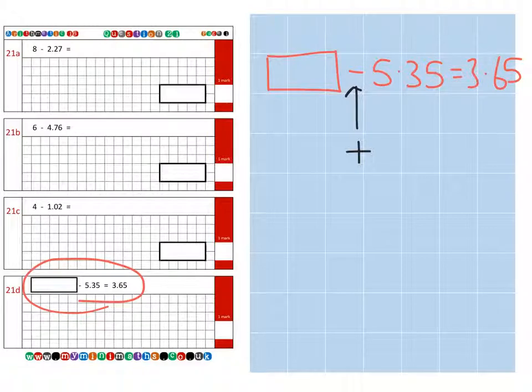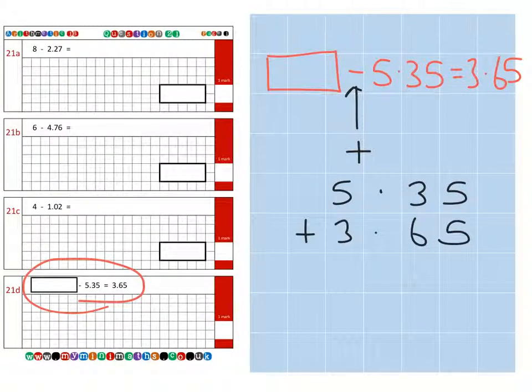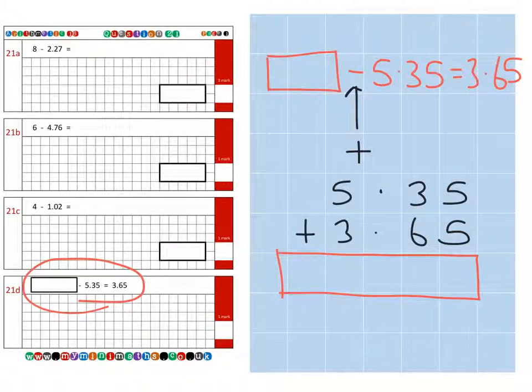So if we take the two numbers here, that's 5.35 and we're going to add 3.65. When we add these together it should, or it will, give us our missing number. So it's just straightforward column addition now.